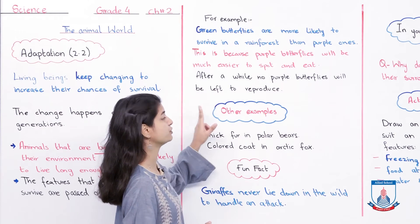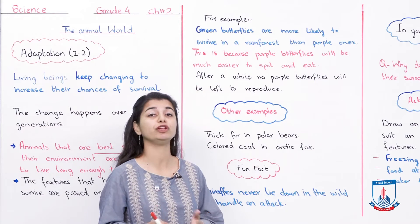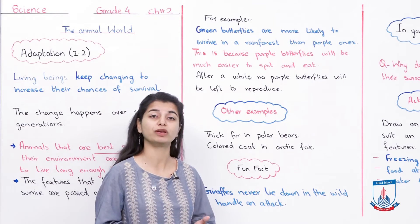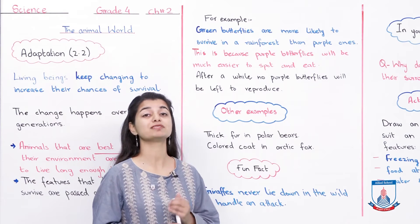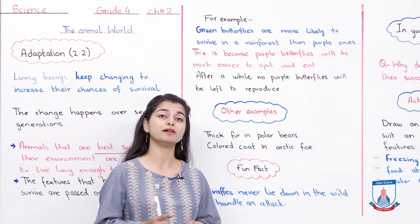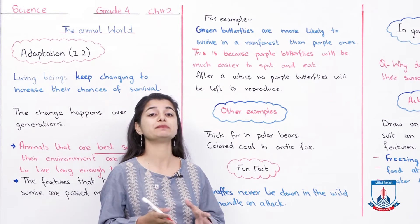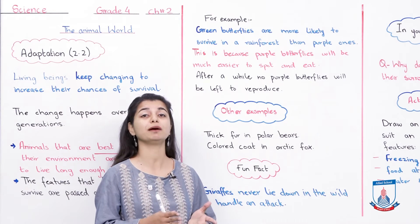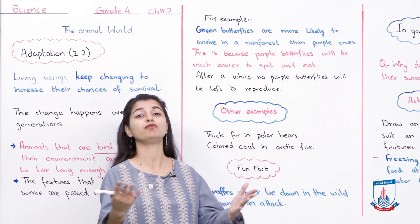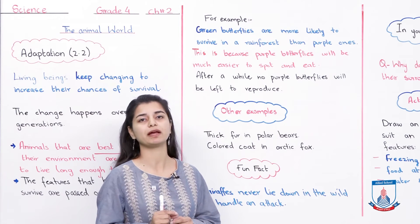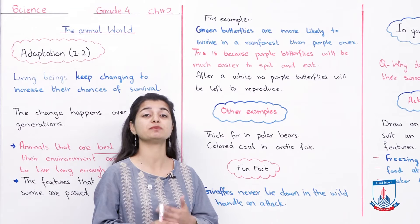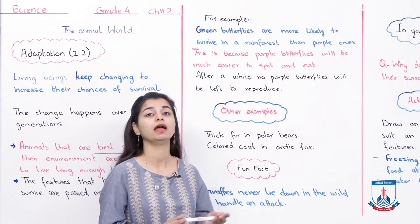After a while, no more purple butterflies will be reproduced. The predators will eat all the purple butterflies, and eventually only green butterflies will remain and reproduce in the rainforest. This is a clear example of adaptation through natural selection.